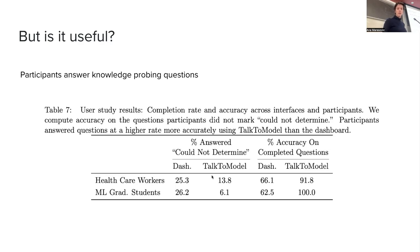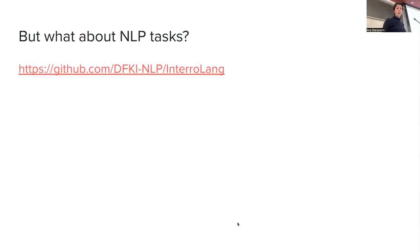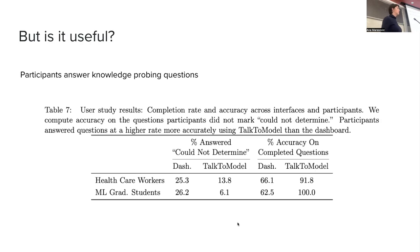Compared to that dashboard, the accuracy and completed questions for Talk to Model is much higher for both groups. The rate of 'could not determine' — meaning they can't really answer — is lower for Talk to Model. These are some good signs for this system.